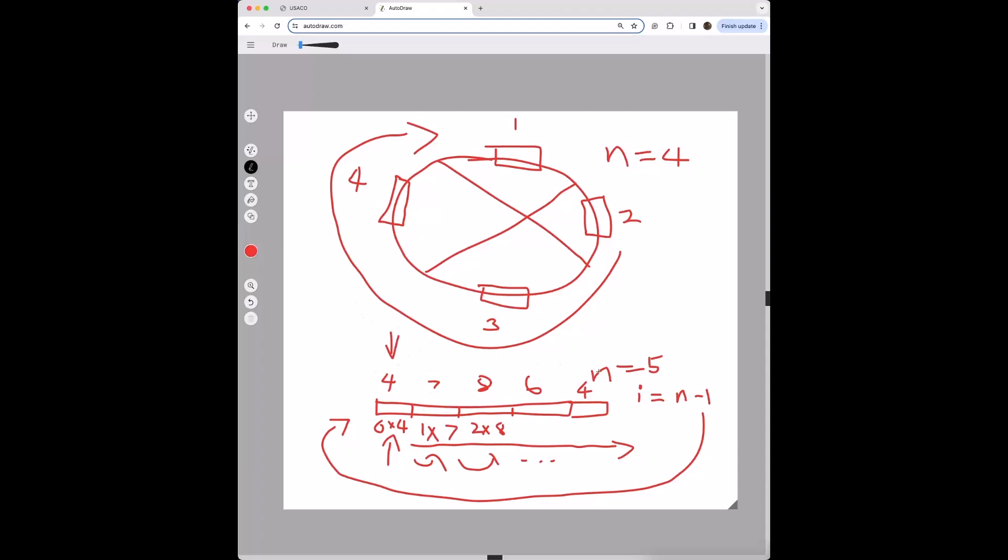The only tricky part about this implementation is making sure that we can somehow loop back to the starting point so that it is a real circle, not just a two-dimensional line.